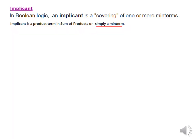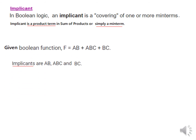Let us understand what an implicant is. In Boolean logic, an implicant is a covering of one or more main terms. Another definition: an implicant is a product term in sum of products, or simply a main term. So if the function is given as f = ab + abc + bc, then all these terms will be called implicants.